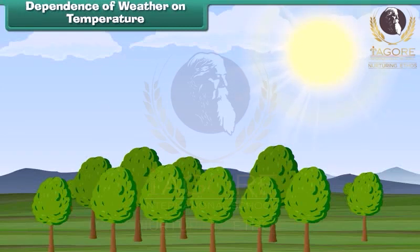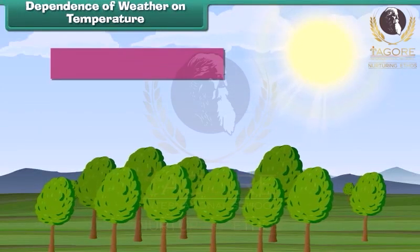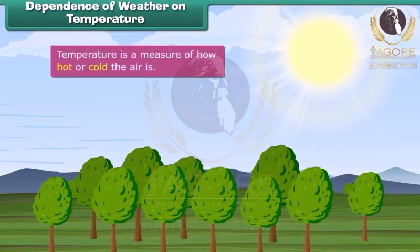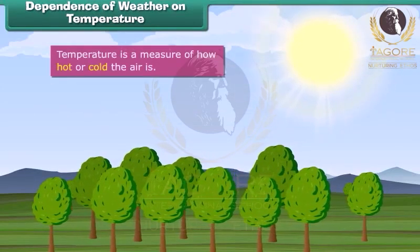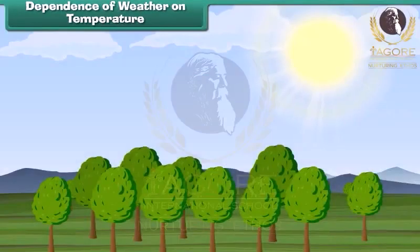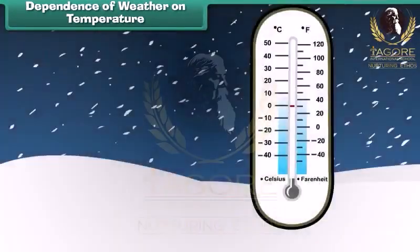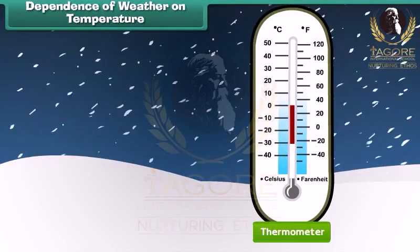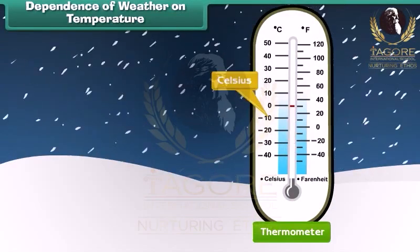Temperature is a measure of how hot or cold the air is. It depends upon the energy it receives from the sun. Temperature is measured with the help of a device called a thermometer and it is calculated in degrees Celsius and degrees Fahrenheit.